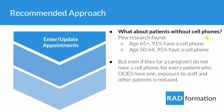What about patients without cell phones? If they have a landline, the United States doesn't have very good support for text-to-speech, and they wouldn't have the landline with them for the please-come-in text message. But Pew Research has found that those age 65 and up, 91% have a cell phone, and age 50 to 64, 95% have a cell phone. But even for patients or caregivers without one, for every patient who does have a cell phone, exposure to staff and other patients is reduced by telling those patients exactly when to come inside instead of waiting in the waiting room.